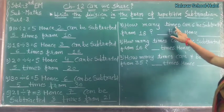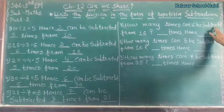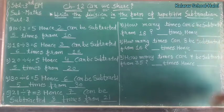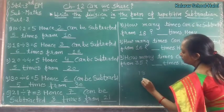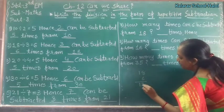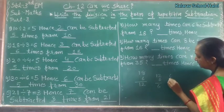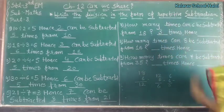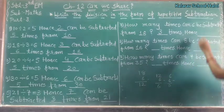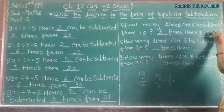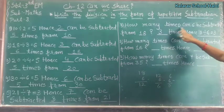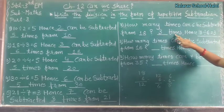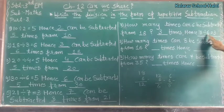Now, the reverse: how many times can 6 be subtracted from 18? 18 minus 6 is 12, 12 minus 6 is 6, and 6 minus 6 is 0. So how many times? 1, 2, 3 times. And how to write: 18 divided by 6 is equal to 3.